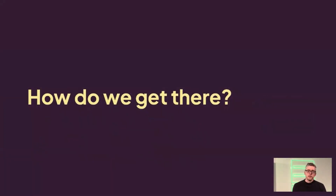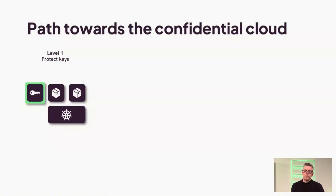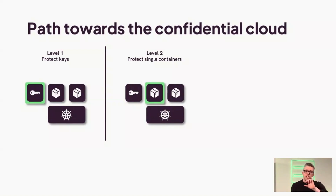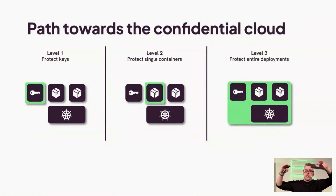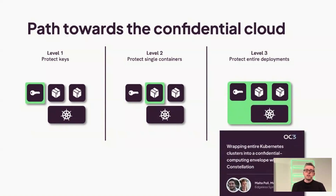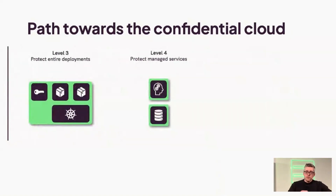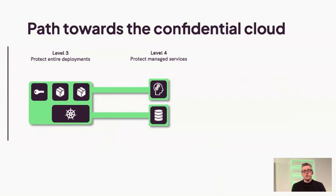So how do we get there? From my perspective, we need to take a few steps to reach the confidential cloud. Step one: use confidential computing to protect keys — super simple. Level two: protect individual containers, which is super useful but still requires reasoning about the overall attack surface. There's quite some buzz around this right now, and we have three talks about confidential containers later today. Level three is protecting entire deployments as a whole — what we focus on at Azure Systems, with a talk by my colleagues Malte and Moritz later. The final step is connecting level three to level four: confidential managed services like databases. Once we have that, we have the end-to-end confidential cloud.